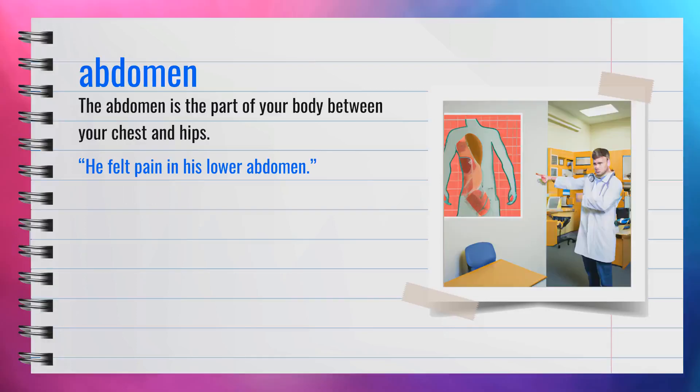The word abdomen, spelled A-B-D-O-M-E-N, is a noun. Another word for abdomen is belly or stomach area. For example, he felt pain in his lower abdomen. In summary, the abdomen is the part of your body between your chest and hips.